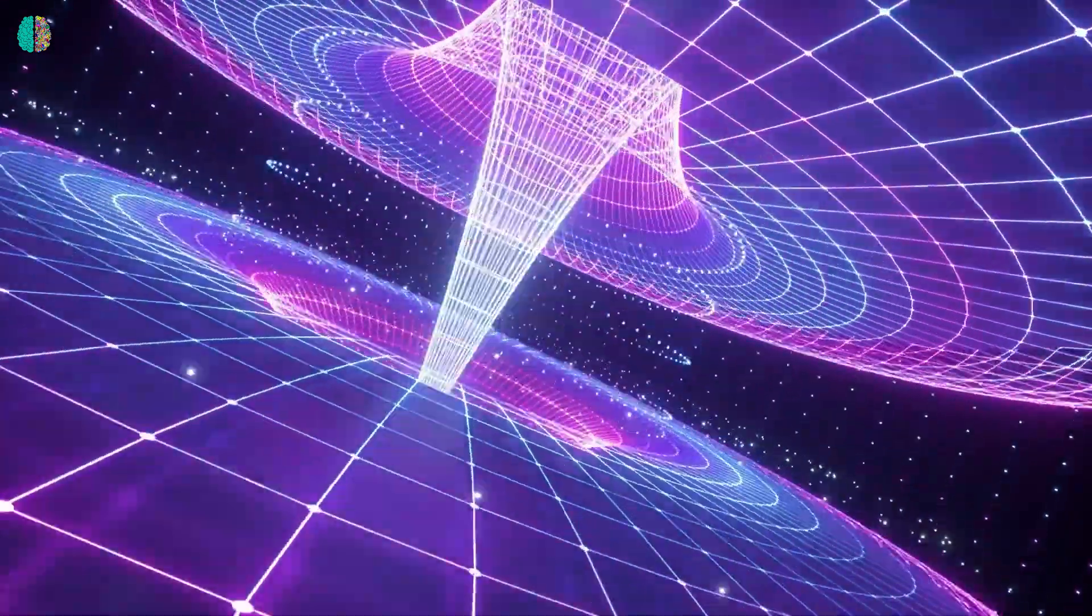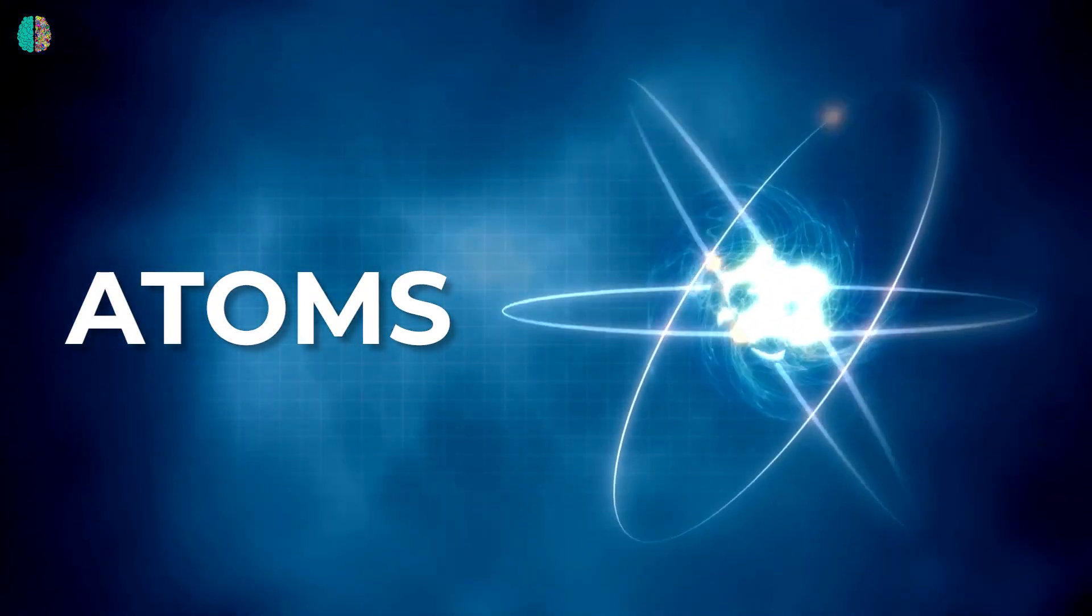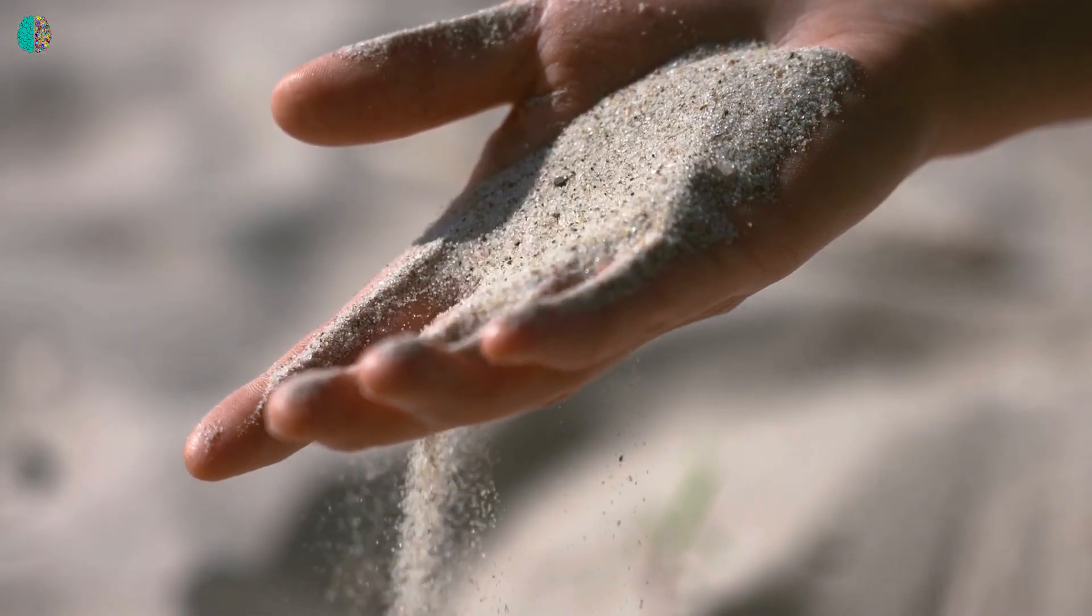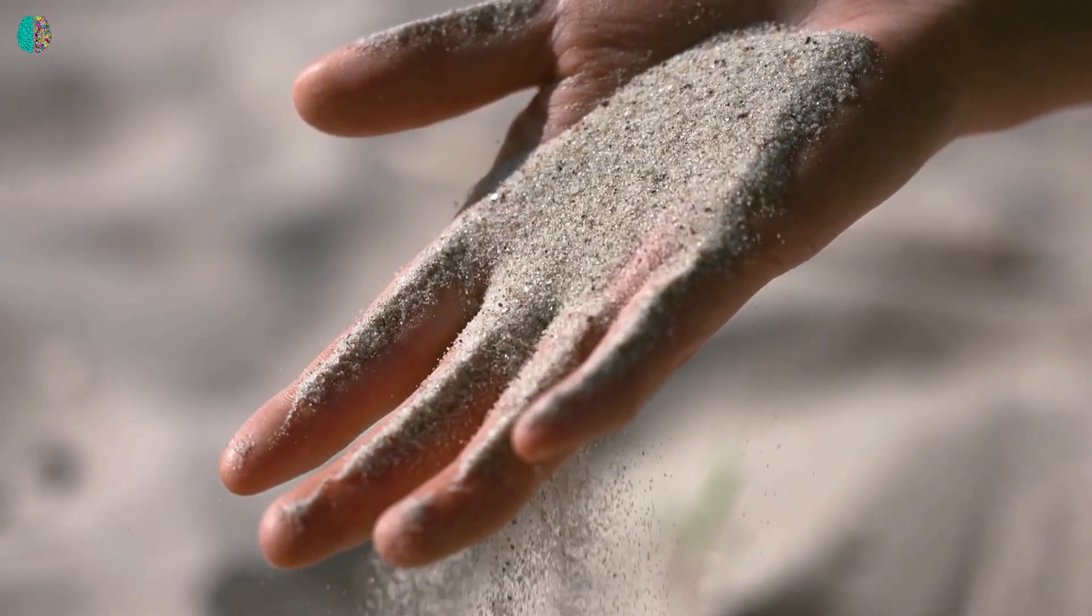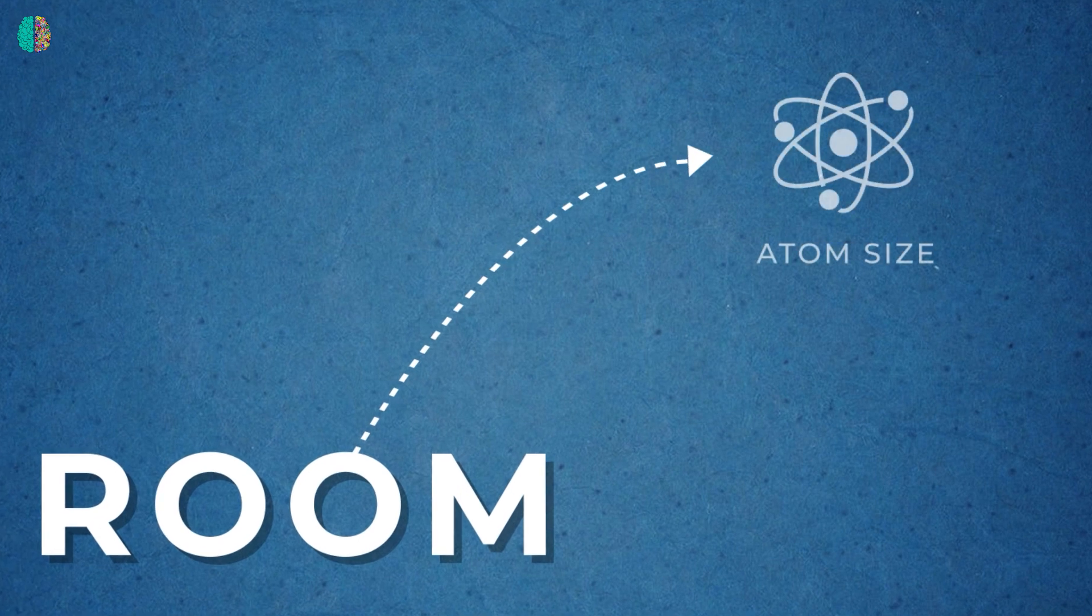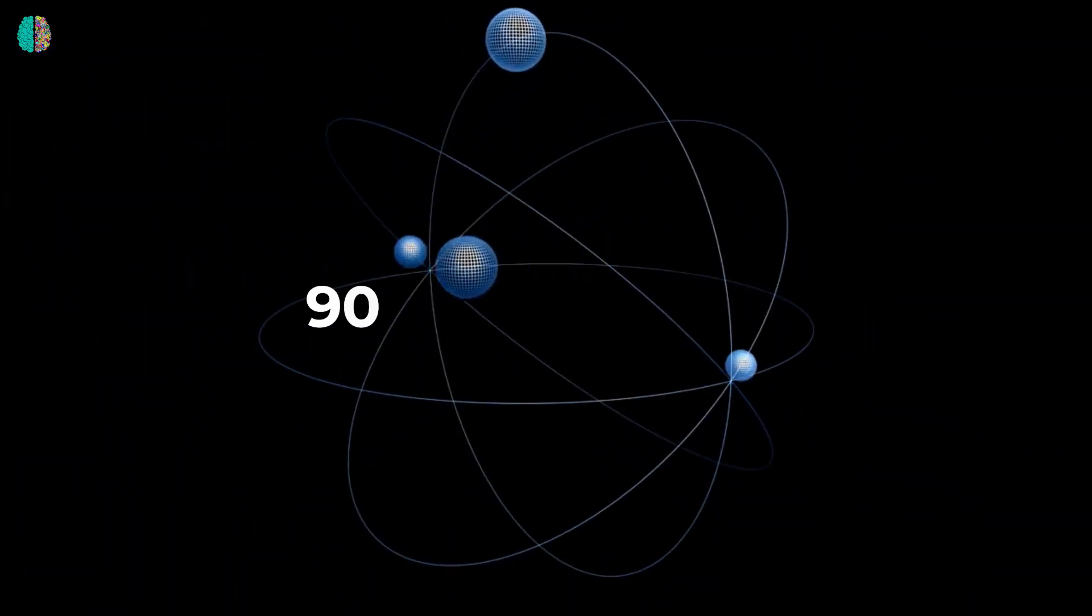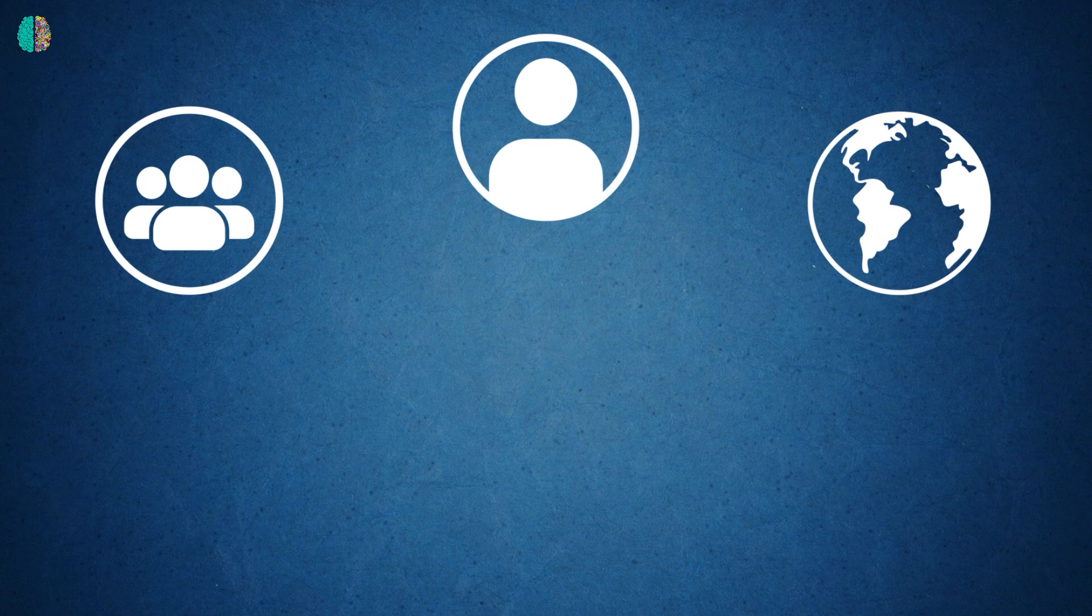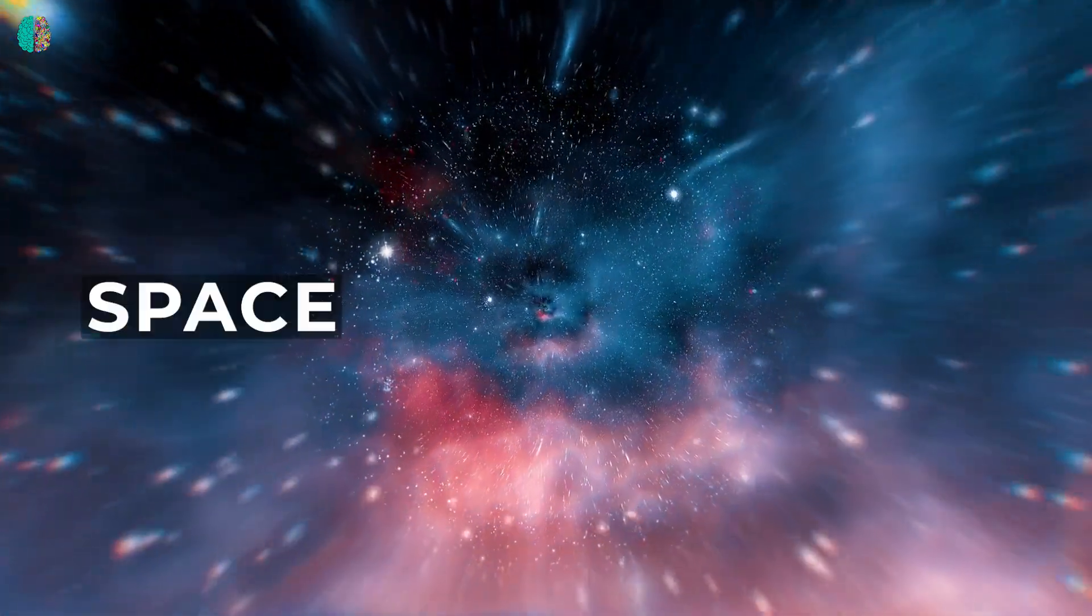लेकिन ये इतनी बड़ी Space Fabric जो Gravity का काम करती है ये आखिर बनी कैसे? Atoms के वजह से। As you all know कि दुनिया में हर चीज़ Atoms से बनती है और एक Atom इतना छोटा होता है कि आप इसे इस चीज़ से समझ सकते हो कि एक Sand के एक Particle या एक Grain में लगभग 50 quintillion Atoms होते है। लेकिन अभी just for our understanding ये मान लीजिए कि एक Atom इस Room के Size के बराबर है तो एक Nucleus का Size कितना बड़ा होगा? एक छोटे से Particle जितना। इसका मतलब एक Atom 99.999% empty है और इसका मतलब आप, मैं और दुनिया की सारी चीज़ 99.99% Space ही तो है और इसलिए Space हर जगह है। Space is everywhere।